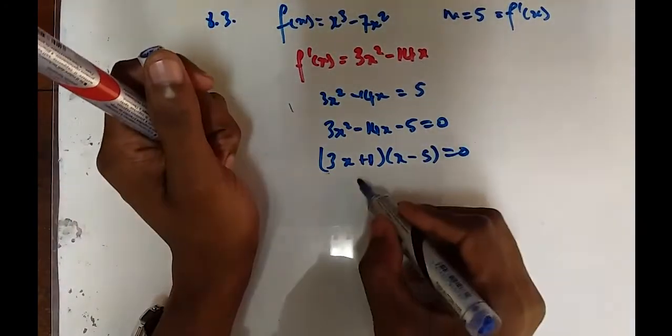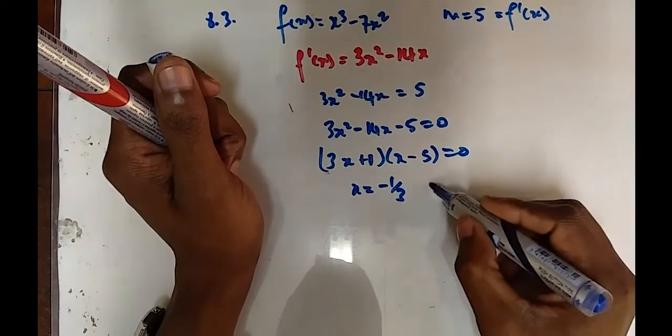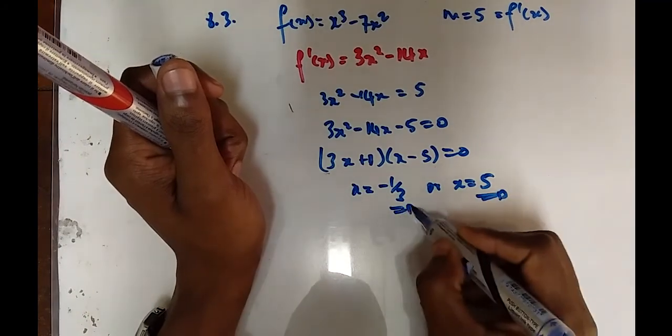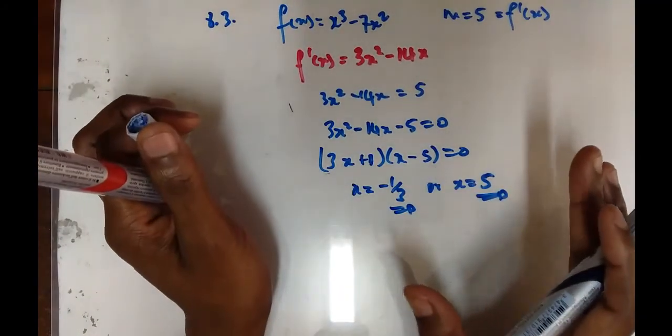Our x values are x = -1/3 and x = 5. These are the x values that will